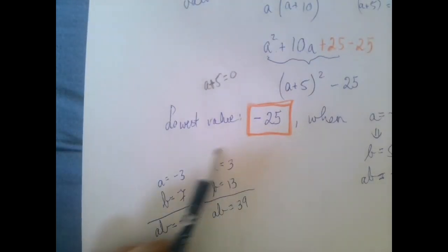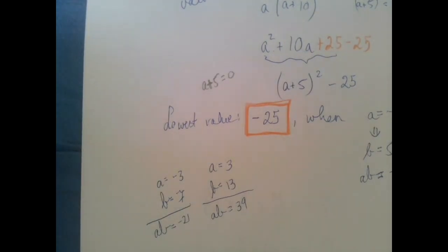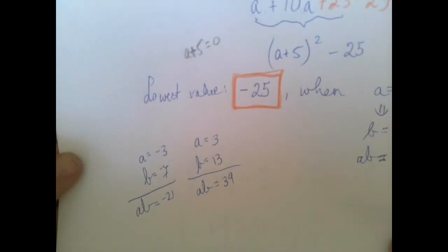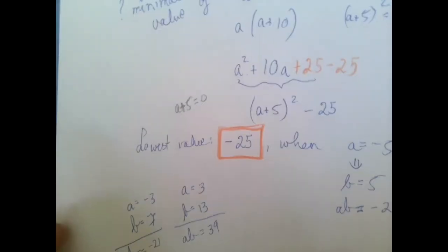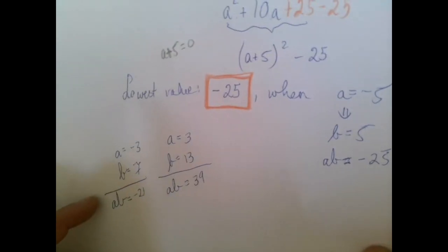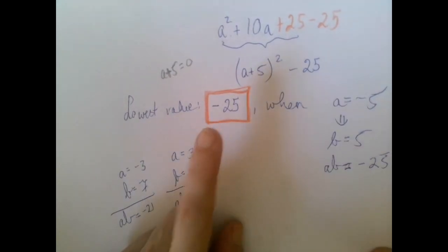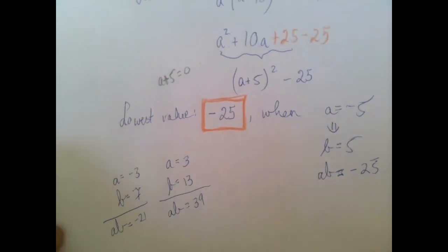So this is more, this is not a proof, but sort of an encouraging sign, giving us a likelihood of if we are correct, that not only negative 25 is the value when a is negative 5, but that it is indeed the smallest value. Thank you for watching.